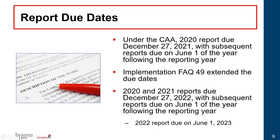Regarding due dates: when the Consolidated Appropriations Act was originally signed into legislation at the end of 2020, the first report was due December 27, 2021. In August of last year, implementation FAQ 49 was released extending the due dates. Currently, information for the years 2020 and 2021 is now due on December 27, 2022, and subsequent reports will be due on June 1st of the year following the reporting year. There has been talk that this may be extended further, though as of now it hasn't been. Additional guidance between now and December 27th to assist entities with reporting obligations is anticipated.